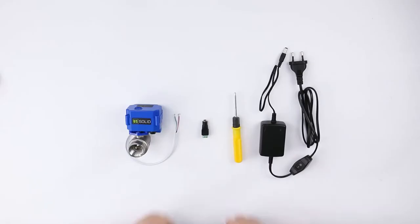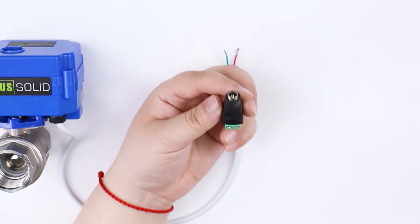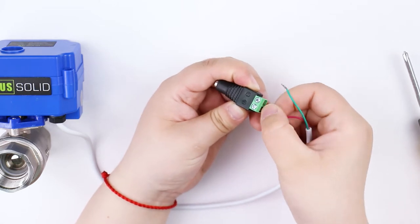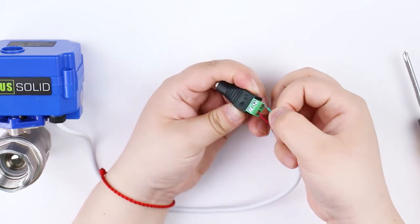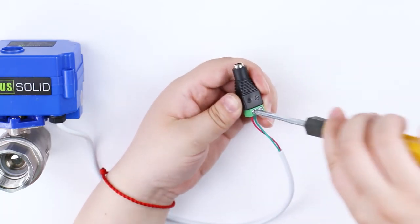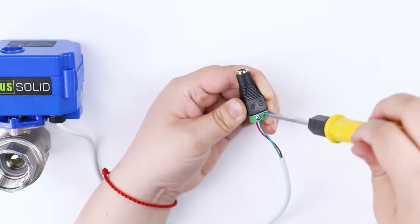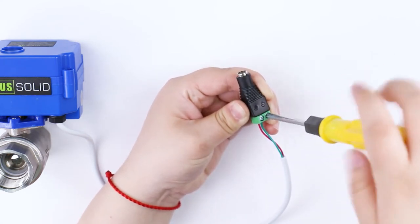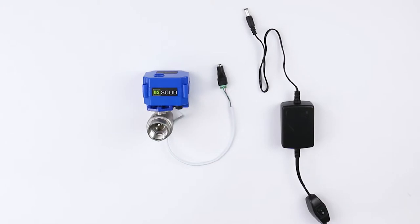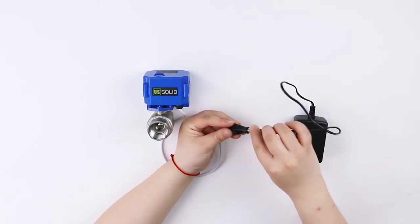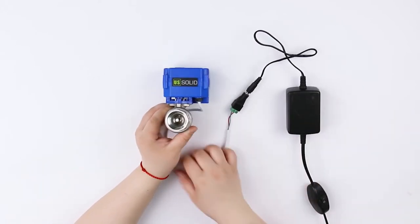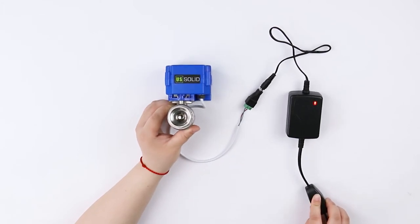The 2-wire auto-return ball valve can be connected directly to a simple on-off switch. We will use a DC power plug to connect the switch and valve with the power adapter.